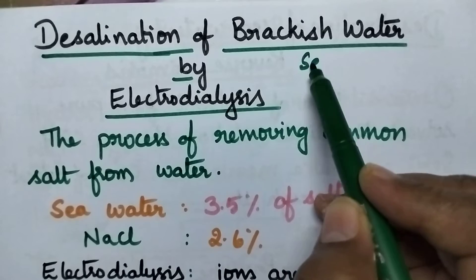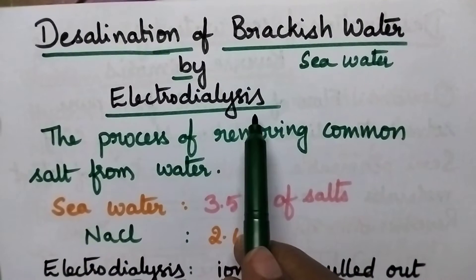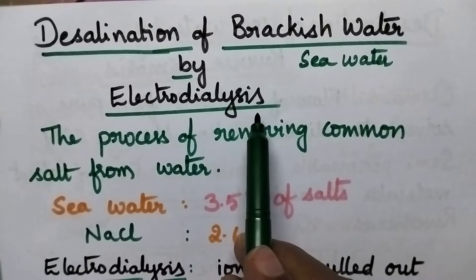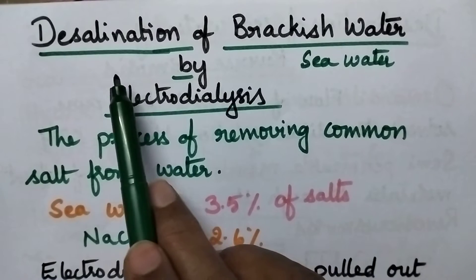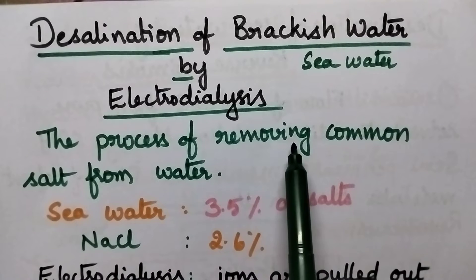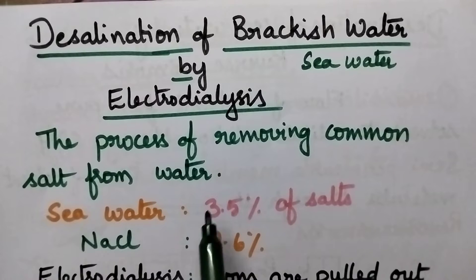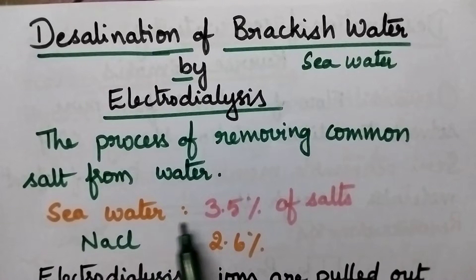Brackish water means sea water that can be desalinated through electrodialysis or reverse osmosis. The process of removing common salt from sea water is desalination. In general, sea water contains 3.5% of salts.